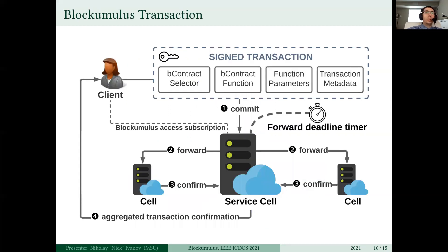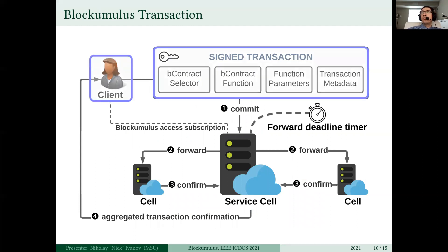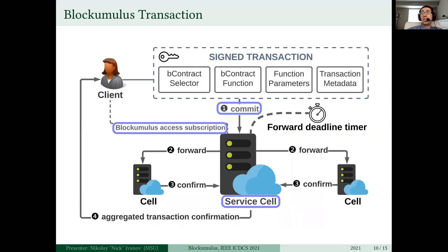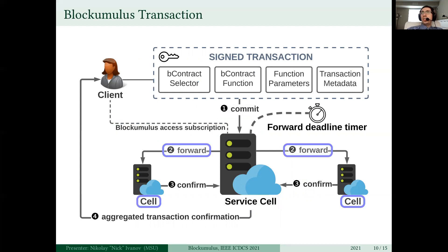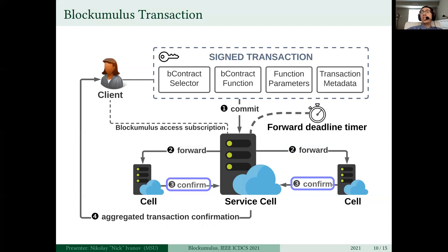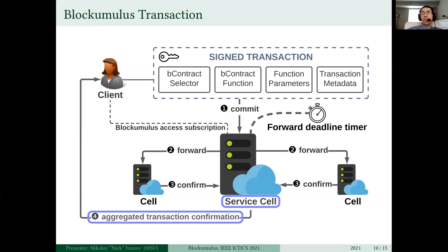Let's see how a typical Blockumulus transaction actually works. A client submits a signed transaction, which is committed to a service cell. The service cell is the cell with which the client has a utility subscription or Blockumulus access subscription. This service cell forwards the transaction to all of the other cells, which within a certain deadline synchronously execute the transaction and submit it back to the service cell. The service cell then aggregates those cryptographic confirmations and sends it back to the client.